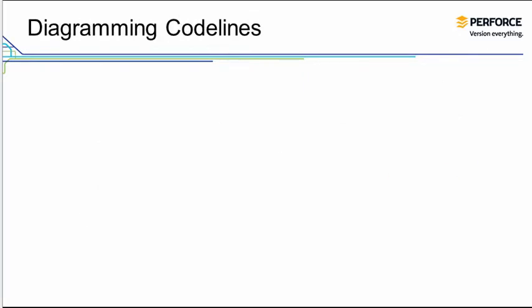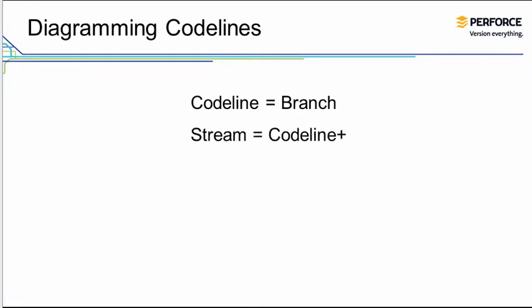For the purpose of this discussion, we use the terms codeline and branch synonymously. You can think of a stream as a codeline with some additional features and functionality.